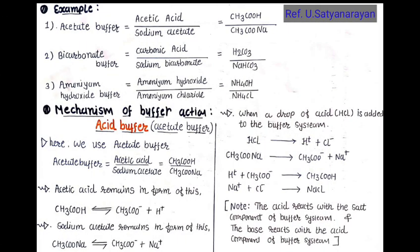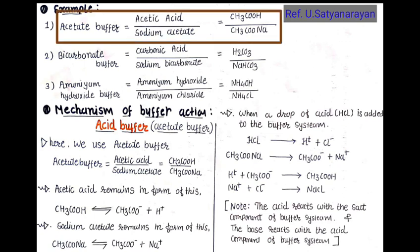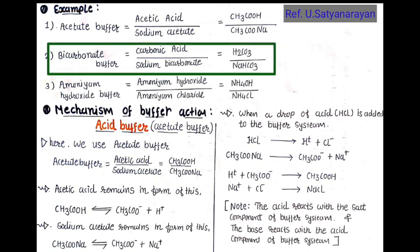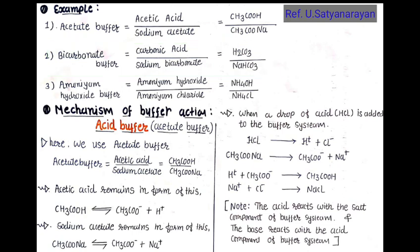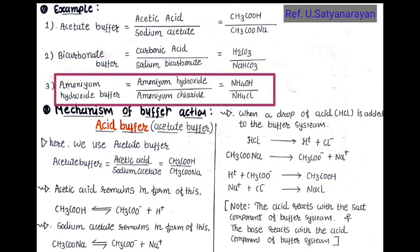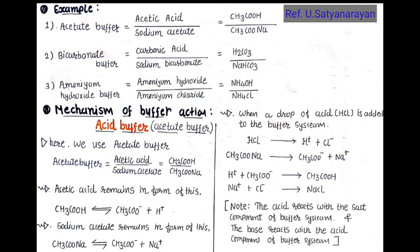Now we are talking about examples of buffers. First one is acetate buffer, represented by acetic acid CH3COOH and its salt sodium acetate CH3COONa. Second one is bicarbonate buffer, represented by carbonic acid H2CO3 and its salt sodium bicarbonate NaHCO3. This bicarbonate buffer system is found in blood plasma and will be discussed in the next video. Third one is ammonium hydroxide buffer, represented by ammonium hydroxide NH4OH and its salt ammonium chloride NH4Cl.